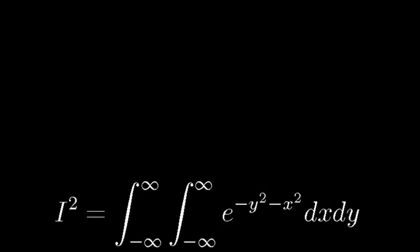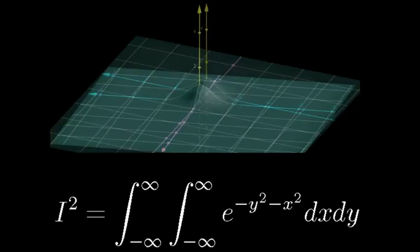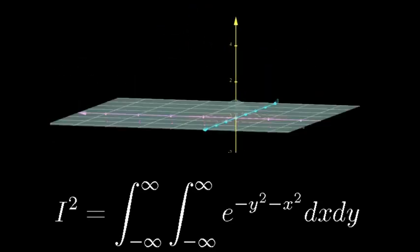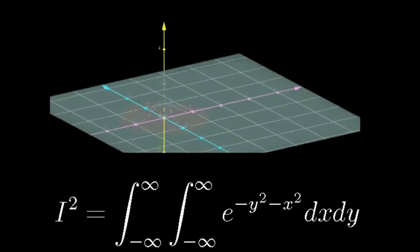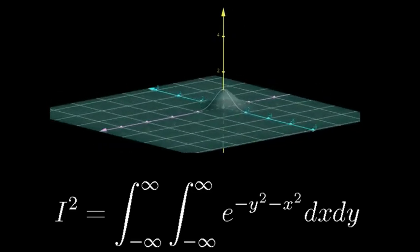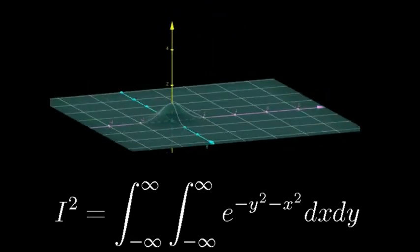This new double integral is telling us to find the volume underneath e to the negative x squared minus y squared between x equals negative infinity and positive infinity, and between y equals negative infinity and positive infinity. In other words, finding the volume underneath the entire thing.